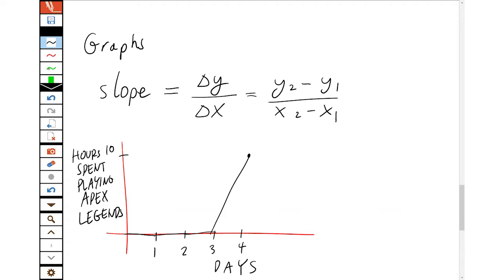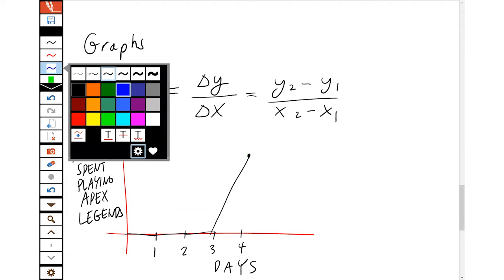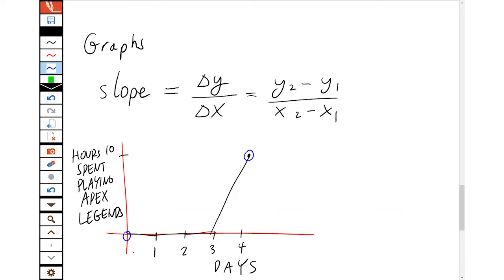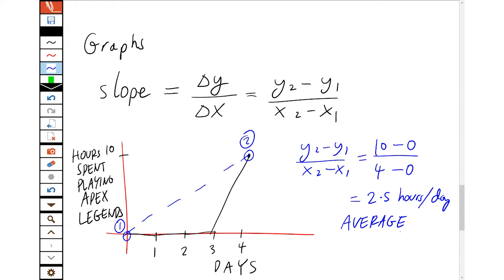So if we were to look over the whole period between here and here, what do I have? I have the new value minus the old. New value minus the old. So that's 10 hours minus 0 over the fourth day minus the zero day. So that's 2.5 hours per day, which sounds pretty good and pretty fun. But you can see that's not actually what happened. That's the average between the second point and the first point. So it's a useful value, but that's not actually what happened. So that's the average value.